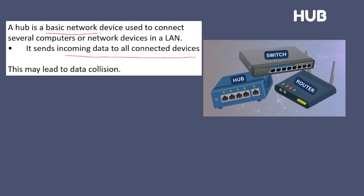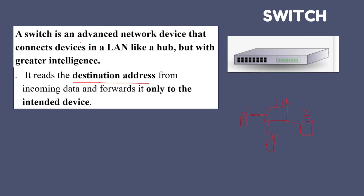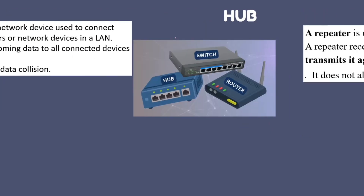A switch is an advanced network device while a hub is a basic one — that is the main difference you must mention. Next is a repeater. A repeater boosts weak signals in the network. It receives the weak signal, rebuilds it, and transmits it again. It does not alter the data, only refreshes the signal. An example of where a repeater is used is a hill station.